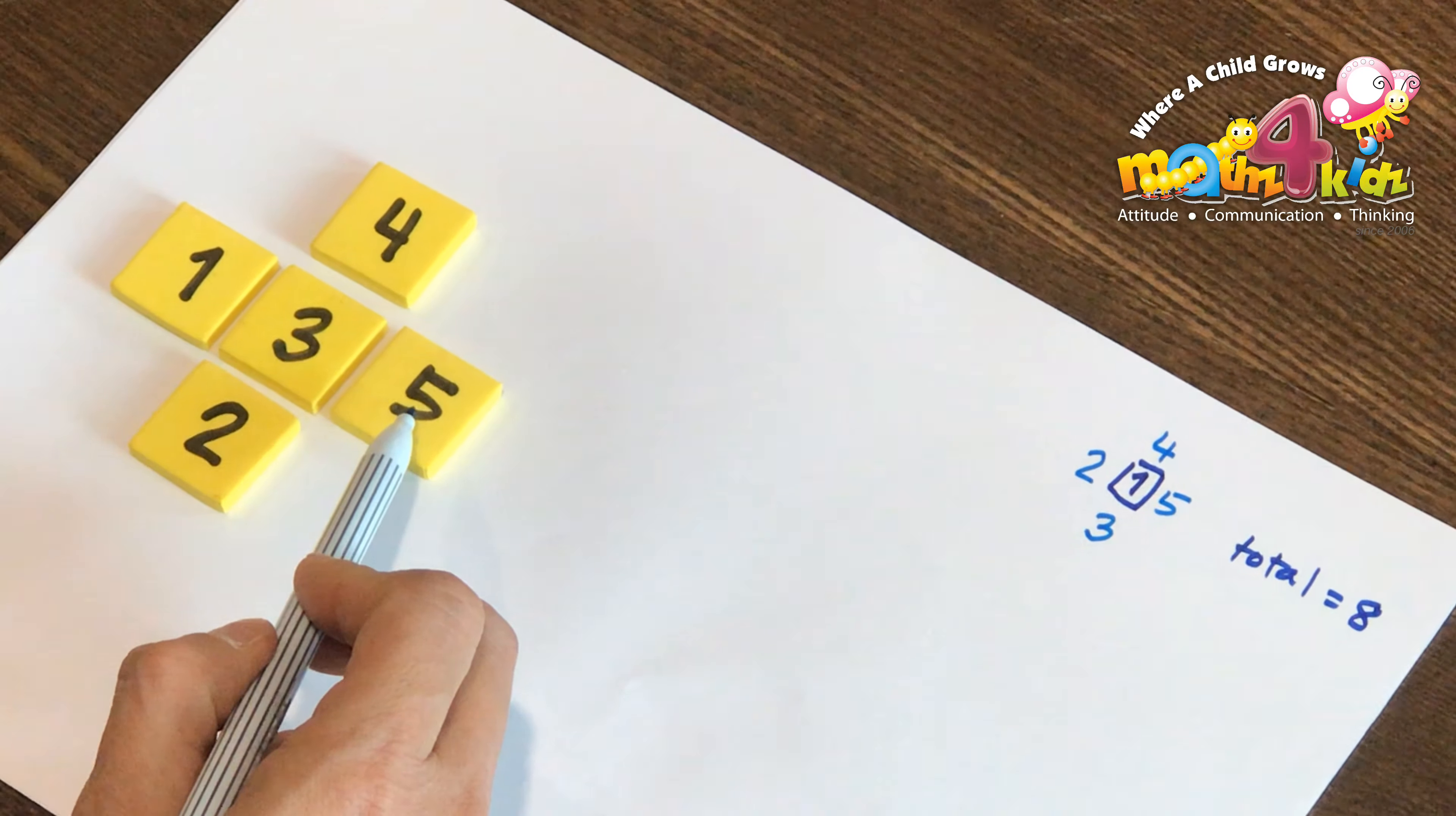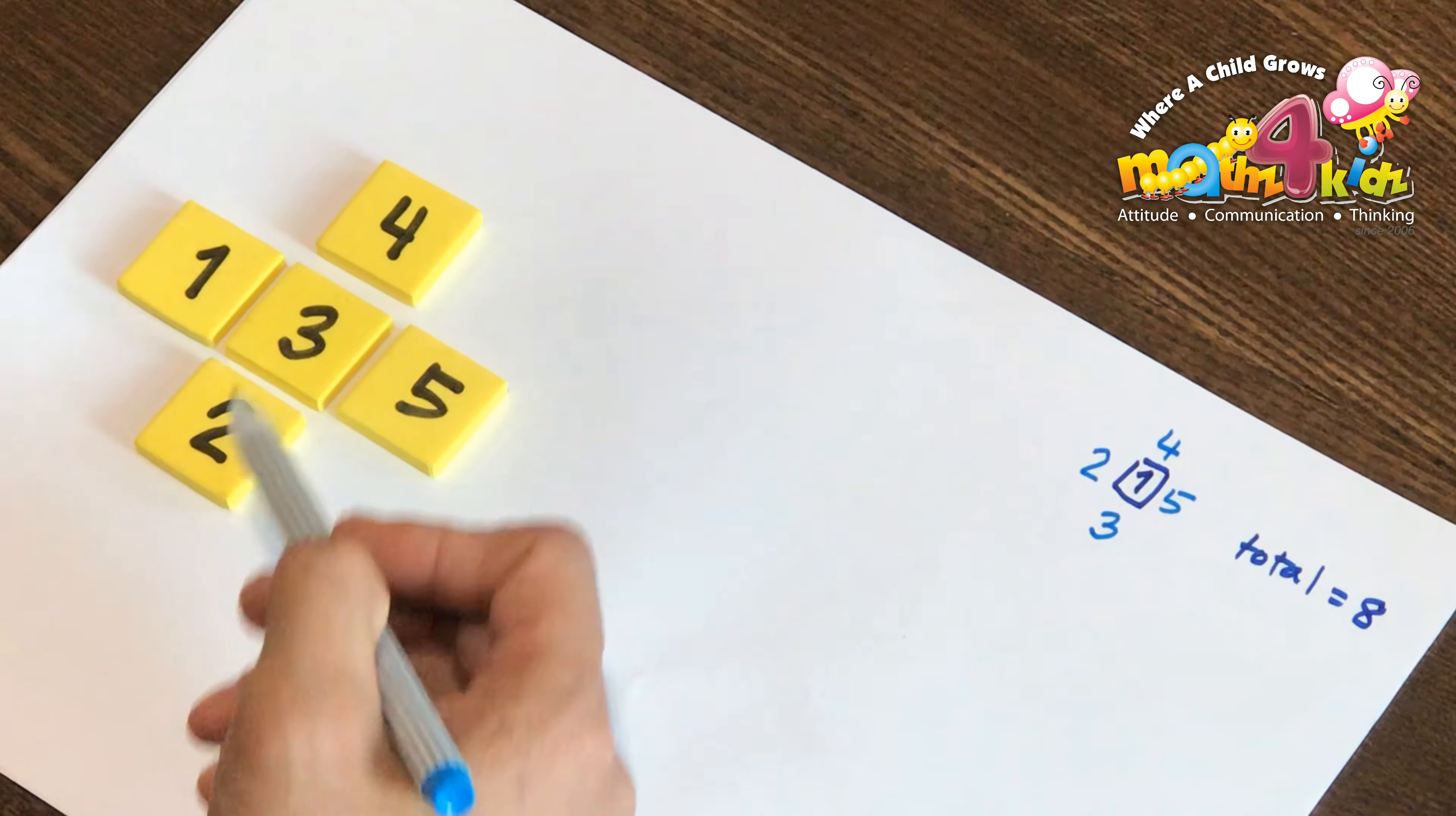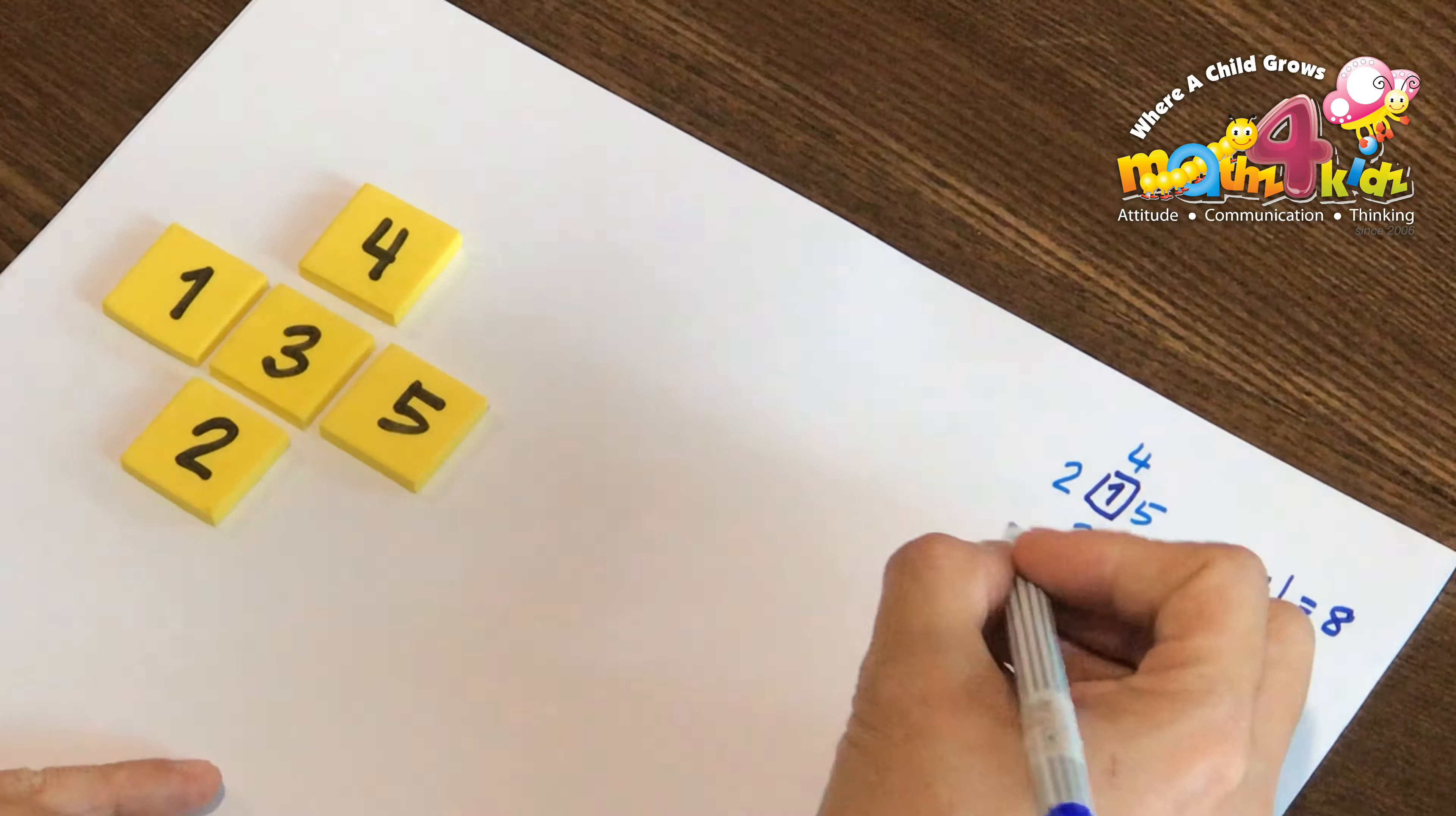1 and 5, 6, 6 and 3, that's 9. 4 and 2, 6, 6 and 3, that's also 9. So this is a correct arrangement with 3 in the middle.